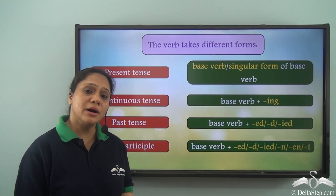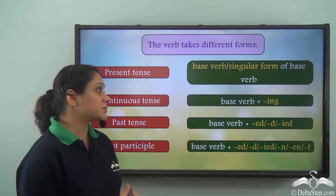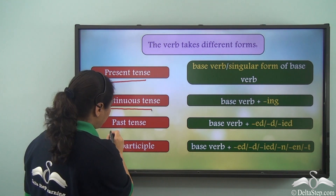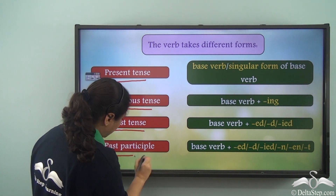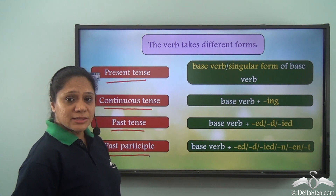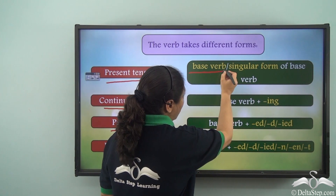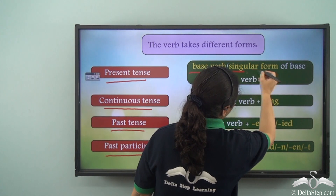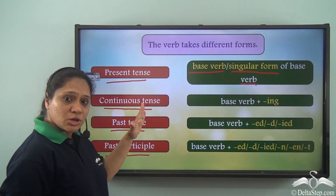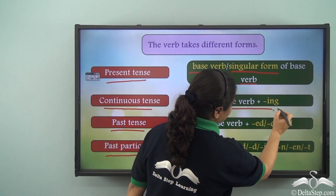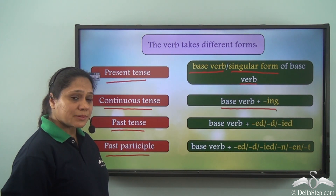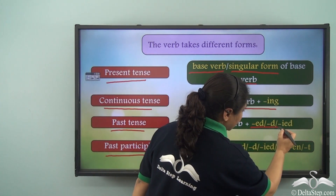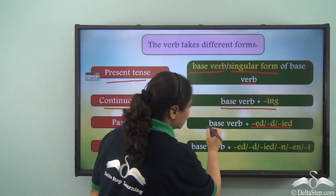A verb can take various forms: the present tense form, the continuous tense form, the past tense form, or the past participle form. In the present tense form, we use the plural form of the verb, which is the same as the base verb, or the singular form of the base verb. In the past tense form, we add '-ed', '-d', or '-ied' to the base verb.